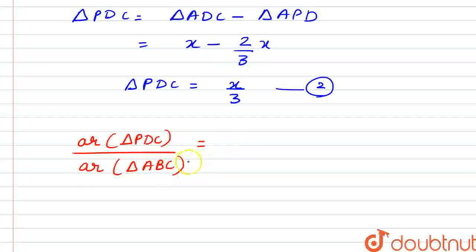And what is area of triangle ABC? It is area of triangle ABD plus area of triangle ADC.